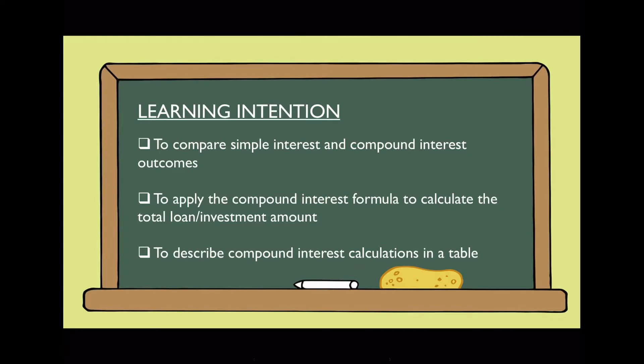Now from your Maths A studies, you would know that there are two different types of interest: simple interest and compound interest. As implied by its name, simple interest is very straightforward — it's where you're earning interest at the same rate every single year, and this results in a linear growth.